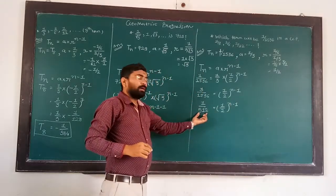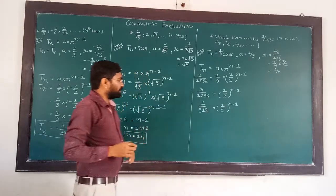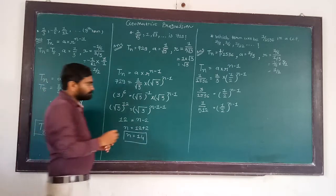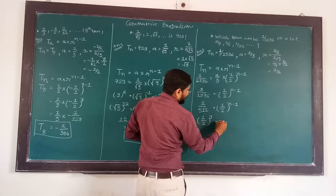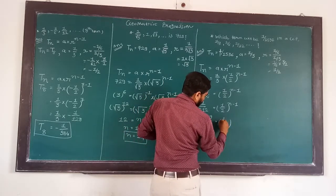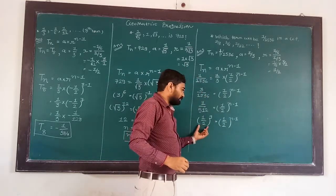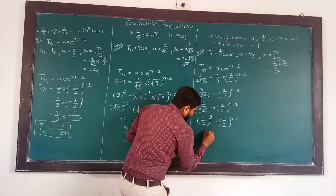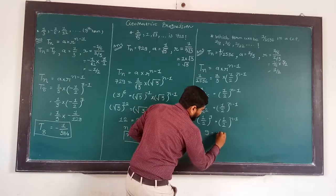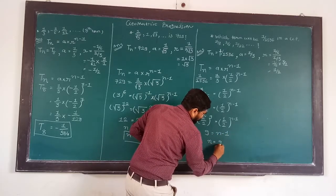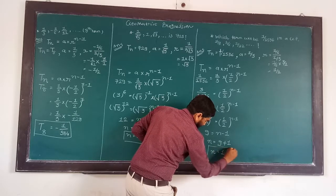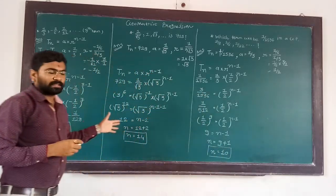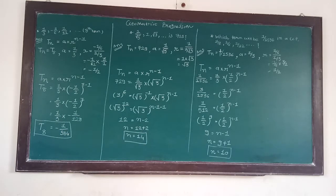See, 1 upon 512 converted into a power of 2 gives 1 by 2 to the power 9, which equals 1 by 2 to the power N minus 1. So 9 equals N minus 1, and with sign change, N is equal to 10. See students, this is a small sum of geometric progression. Thank you class.